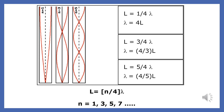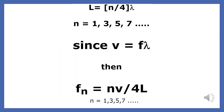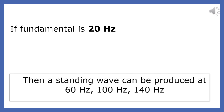Let's review what you learned about a standing wave closed at one end. These standing waves have a node at one end and an anti-node at the other end. The length of this standing wave is always an odd number multiple of a quarter wavelength, and every harmonic is an odd number multiple of the fundamental. For example, if the fundamental is 2 Hz, standing waves can be produced at 6, 10, and 14 Hz, but not at 9 Hz. If the fundamental is 20 Hz, then standing waves can be produced at 60, 100, and 140 Hz — that is one, three, five, and seven times the fundamental.